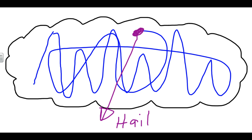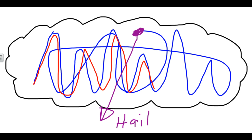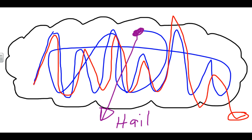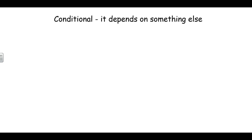The sequence is called the Hailstone Sequence because the set of numbers often goes up and down and up and down — maybe way, way up and way, way down — until finally it settles. Unlike those first two sequences with simple rules, the Hailstone Sequence is what's called a conditional sequence, and something that's conditional just depends on something else.